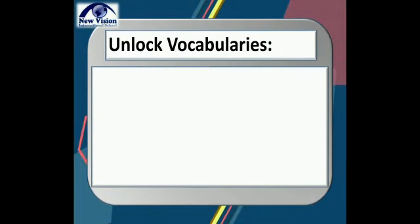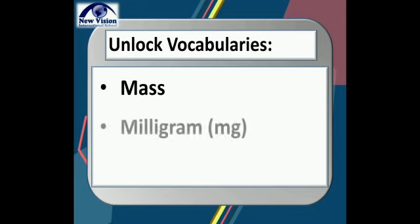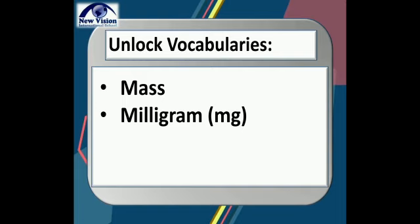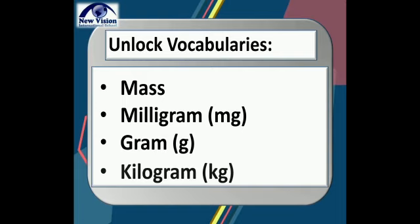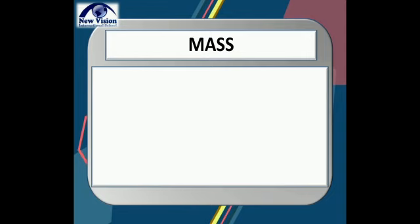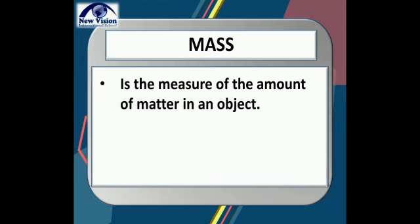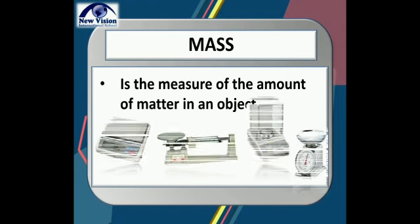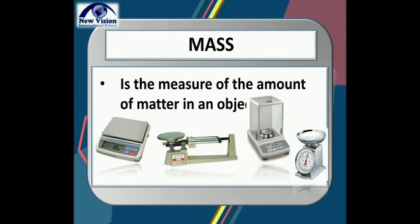Let's start our lesson by unlocking the vocabulary terms we will be using. The terms are: mass, milligram or mg, gram or g, and kilogram or kg. Our first vocabulary word is mass — it is the measure of the amount of matter in an object. Mass is measured using these instruments.